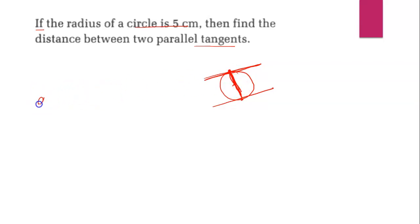So we will write here: distance between two parallel tangents is equals to diameter, and diameter is equals to double of the radius.